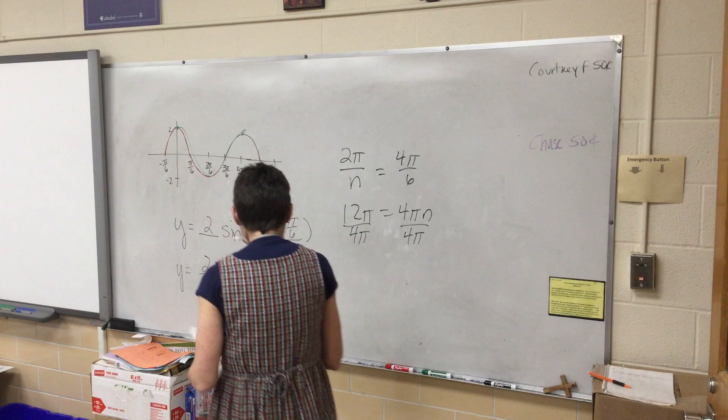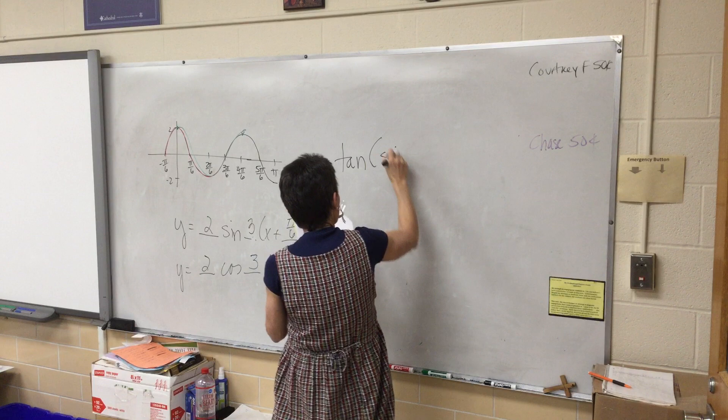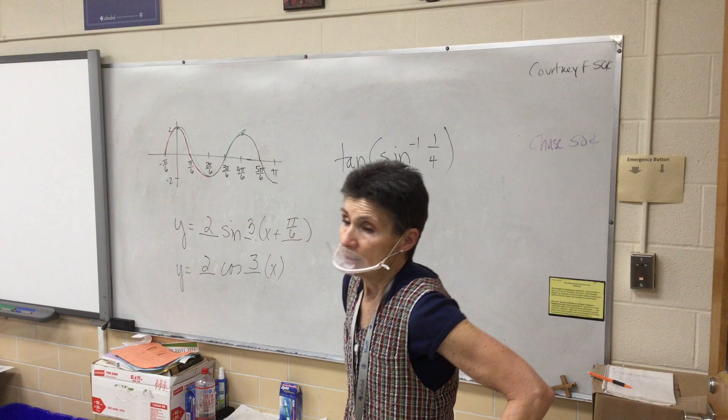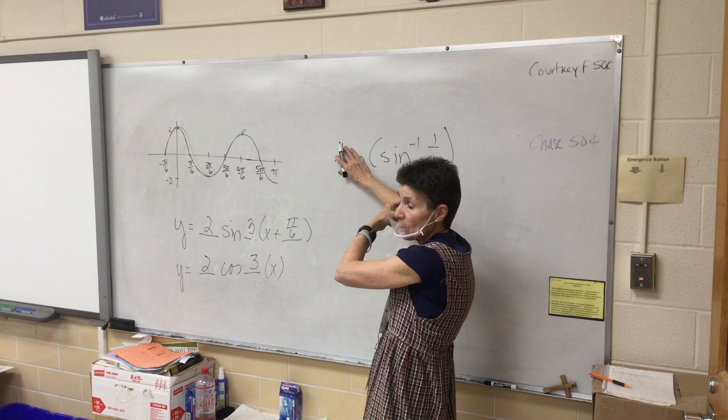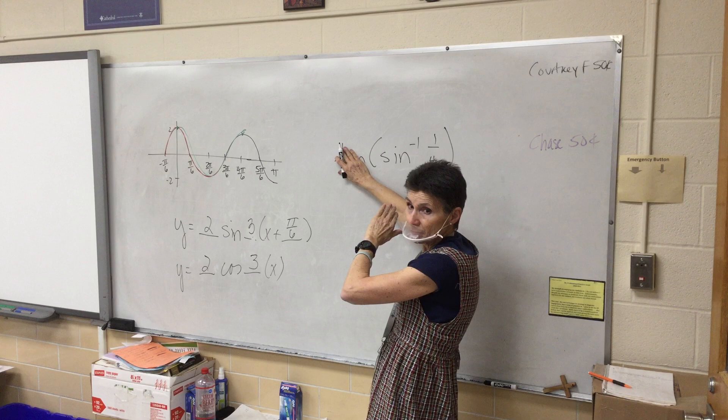Next — this is a no-calculator quiz, so you will not be using the calculator at all. We have to find the tangent of the angle whose sine is 1/4. Remember, this is an angle, so I want to draw a picture of that angle. I don't need to know what the angle is, but I have to draw a picture of it.